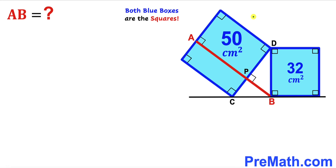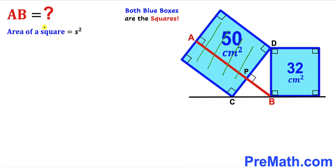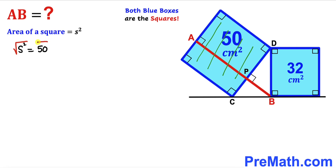We are going to find the side lengths of both blue squares. Focusing on the larger blue square, the area of a square formula is: Area = s². Since the area of the larger blue square is 50, we write s² = 50, and taking the square root on both sides, the side length s of the larger blue square is 5√2 centimeters.